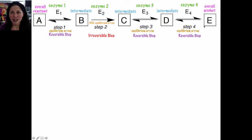However, if I increase the concentration of E, I would not increase the concentration of A, because step 2 is irreversible. Therefore, if I increase the concentration of E, I would push the equilibrium in the reverse direction. E would be converted into D, so concentration of D would increase, and D would be converted into C, so concentration of C would also increase. However, C cannot be converted back into B, and so the concentration of C does not affect the concentration of B or A.